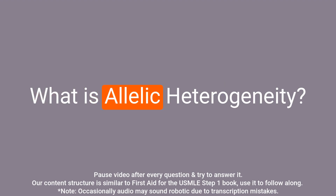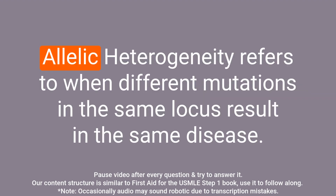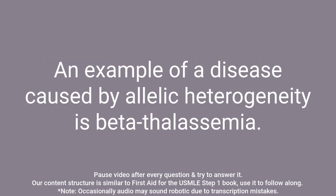Question: What is allelic heterogeneity? Answer: Allelic heterogeneity refers to when different mutations in the same locus result in the same disease. An example of a disease caused by allelic heterogeneity is beta thalassemia.